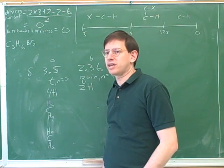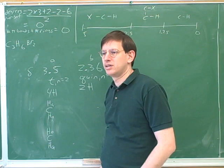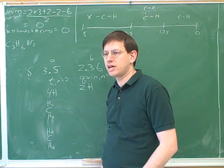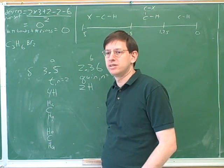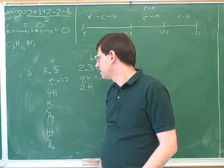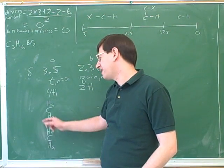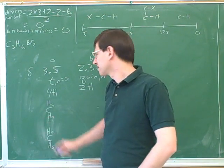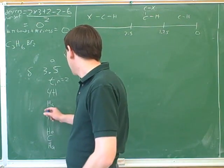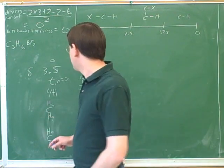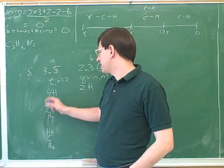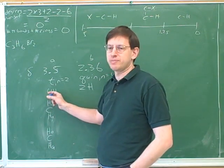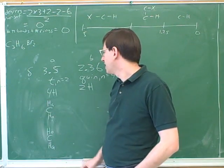By the way, how many carbons are there in this molecule? There are three. So not too much more work to do — we've already got two of the carbons. There's really only one thing this could represent: two CH2 groups. That's the only way to get two equivalent groups that have four hydrogens.